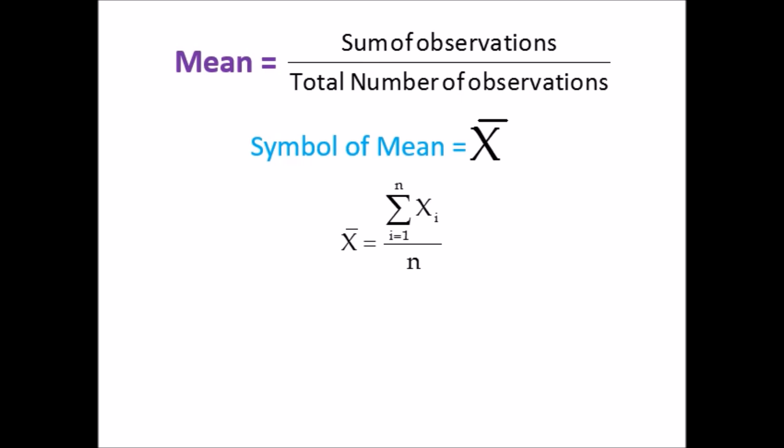Jab aap kisi bhi cheez ka mean nikalenge, to aap use divide karenge number of observations se, upar hoga sum of observations. To iska matlab jab aapki observations hain, numbers hain, items hain, wo kam se kam ek hogi aur zyada se zyada n hongi. X̄ = Σ Xi (i=1 to n) / n.